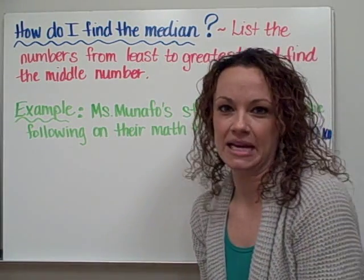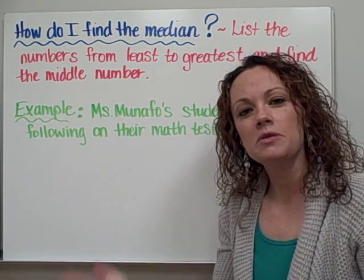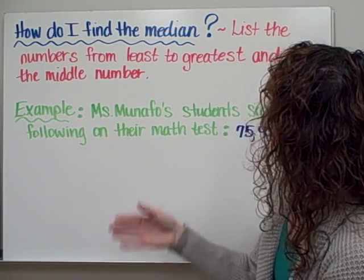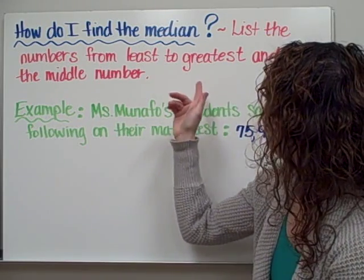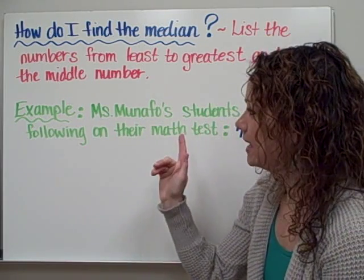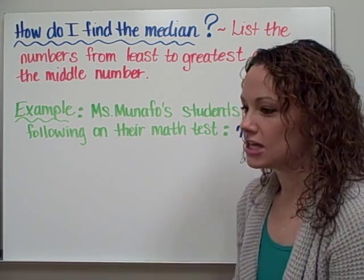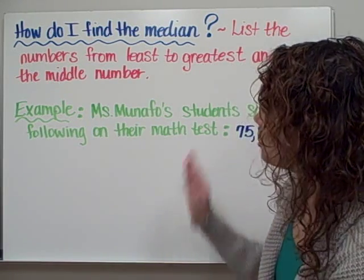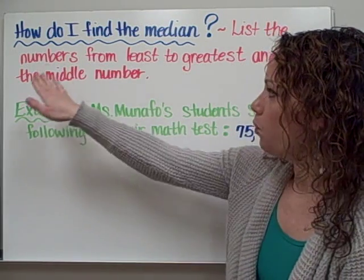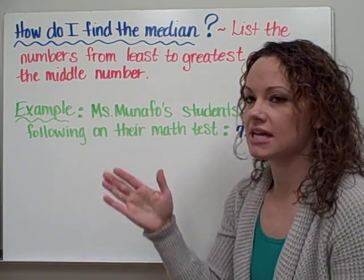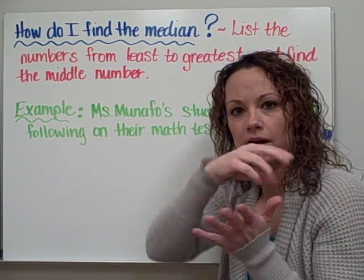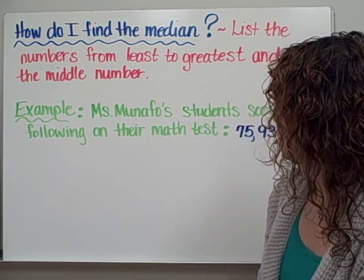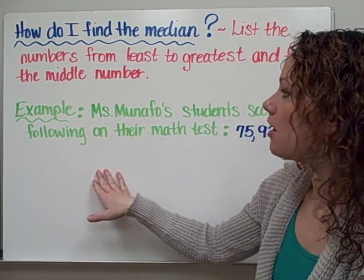How do I find the median? You're going to be listing the numbers from least to greatest, just like you did when you were finding the mode. And then you're going to find out which number falls in the middle — which number is right in the middle of that line of numbers. So let's move into our example.